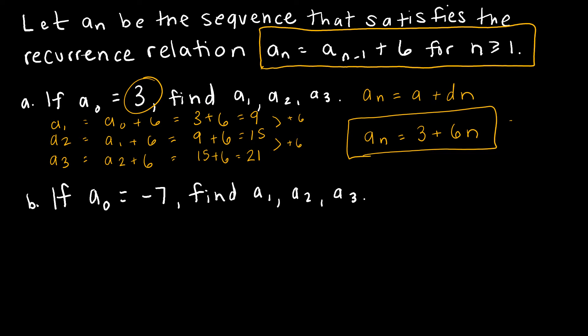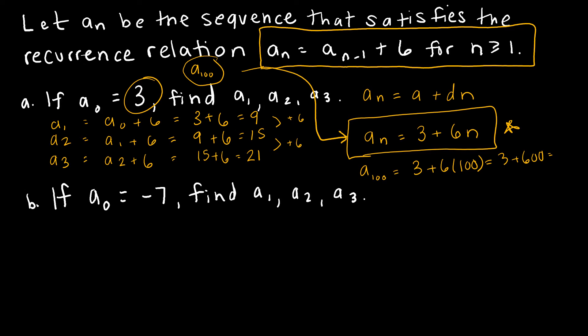That closed form isn't required for this question, but it's worth noting. If someone asked for a(sub 100), using the recurrence relation would require finding every term from a(sub 4) through a(sub 99) — a lot of work. With the explicit closed form, it's easy: a(sub 100) = 3 + 6*100 = 603. This illustrates the relationship between a recurrence relation and a closed-form equation.